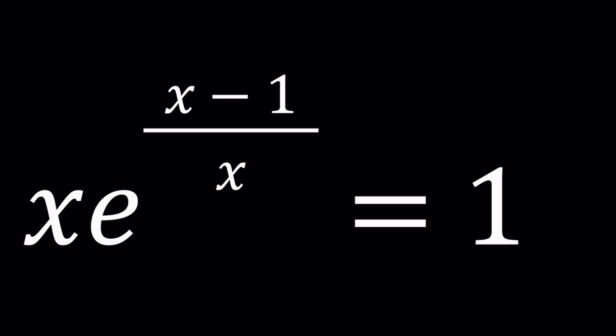We have x times e to the power x minus 1 over x, that is equal to 1, and we're going to be solving for x values.